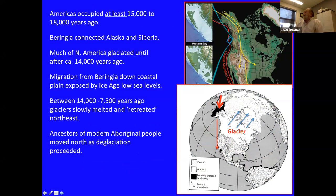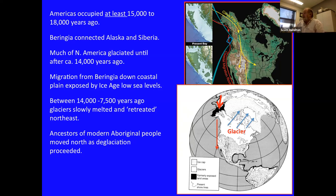What we do know is that the Americas were probably occupied by humans for at least the last 15 to 18,000 years. Our best interpretation is that those early occupants arrived in the Americas from northern Siberia at the height of the ice age, and they crossed from Asia to the Americas across the Bering land bridge that was exposed because sea levels were so much lower.